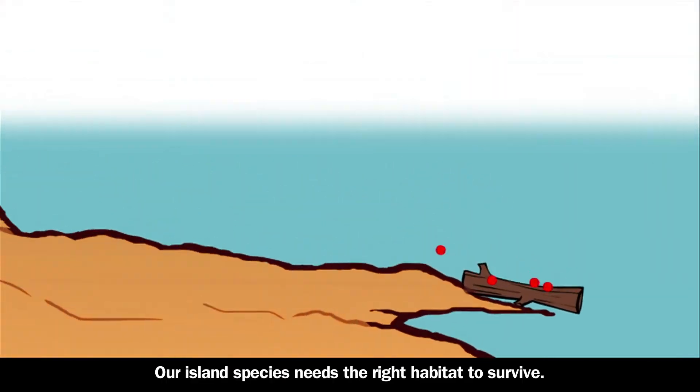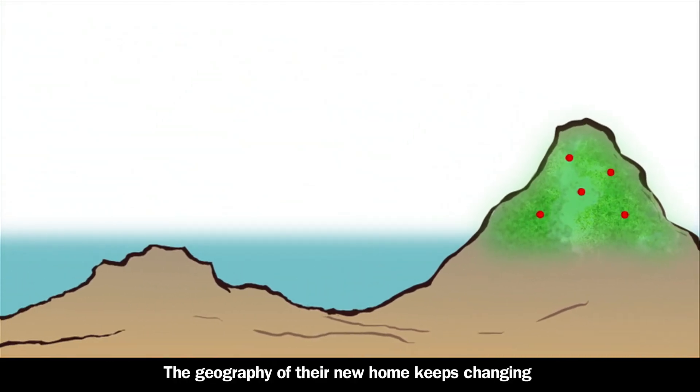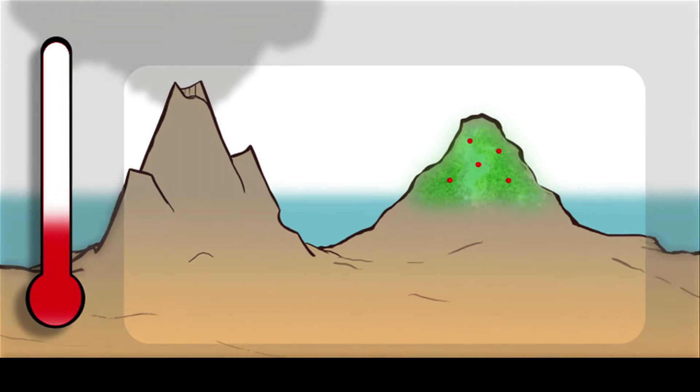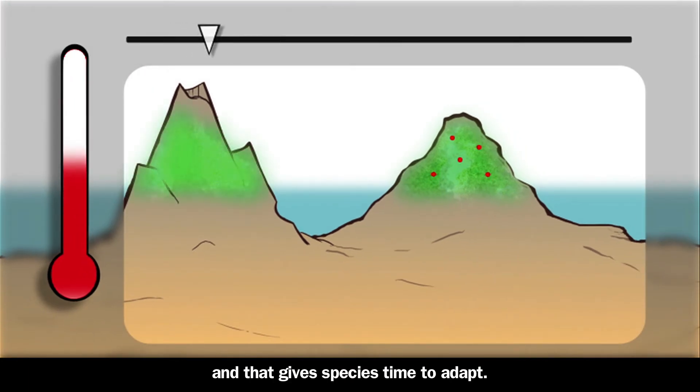Our island species needs the right habitat to survive. The geography of their new home keeps changing, and Earth's climate naturally fluctuates over millions of years, and that gives species time to adapt.